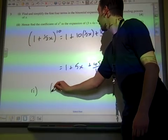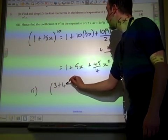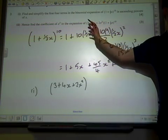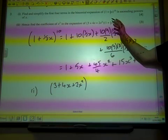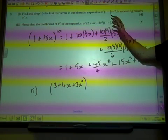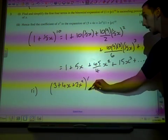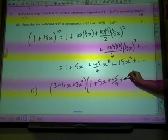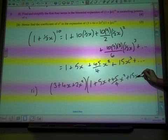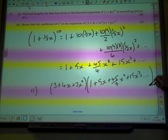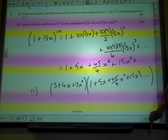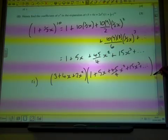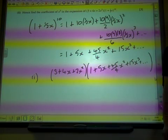In part two, we're doing three plus four x plus two x squared, and we're timesing it by this thing here, but we're not timesing it by the binomial bracket there, we're timesing it by our expansion. And we want to find the coefficient of x cubed in this expansion.